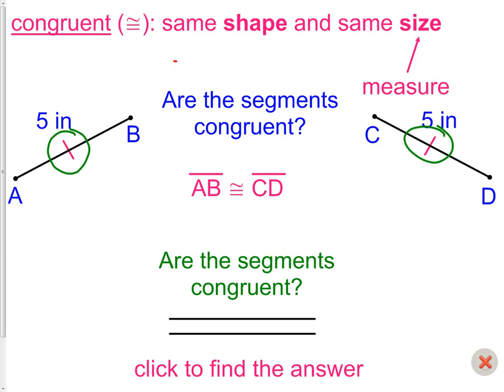If I was to draw another line, we will call it YZ. And I put one tick mark on it, then it would be fair to say that YZ is 5 inches as well, because it has one tick mark, just like the other two lines.